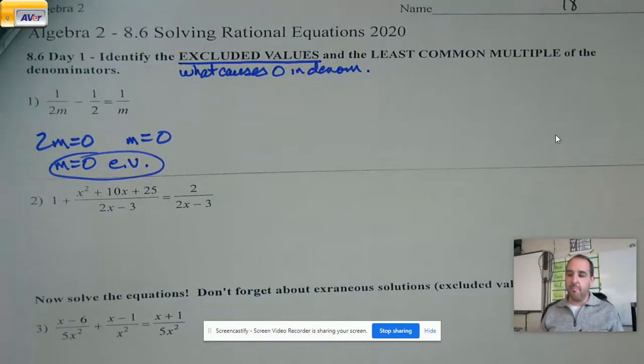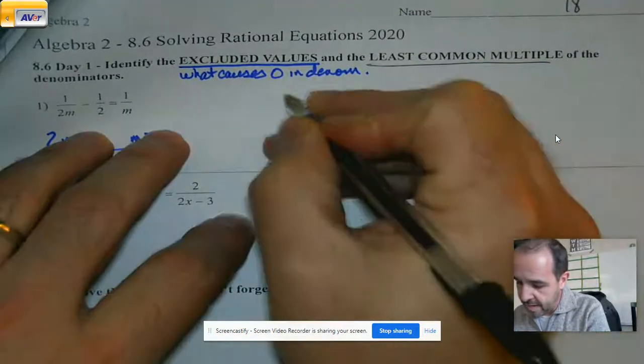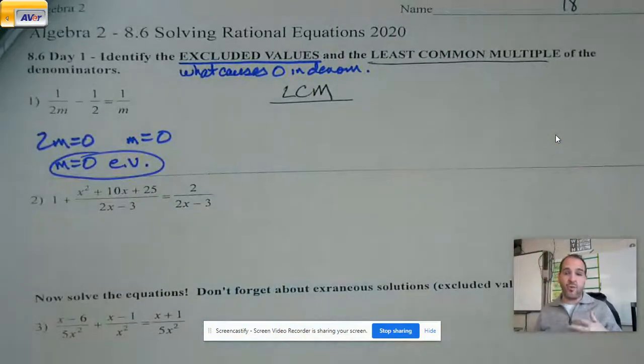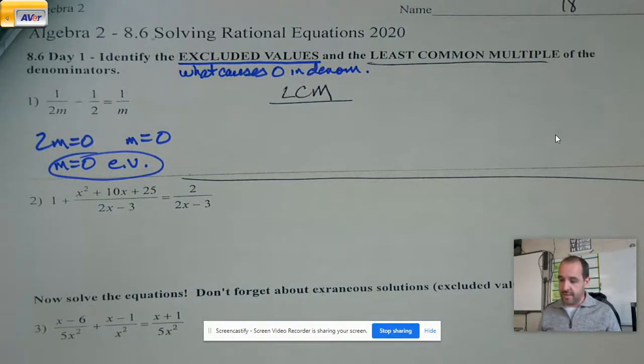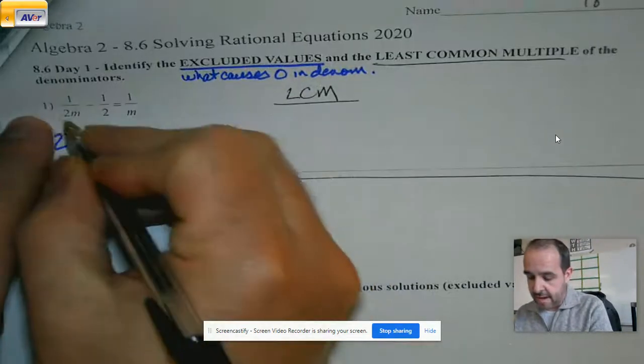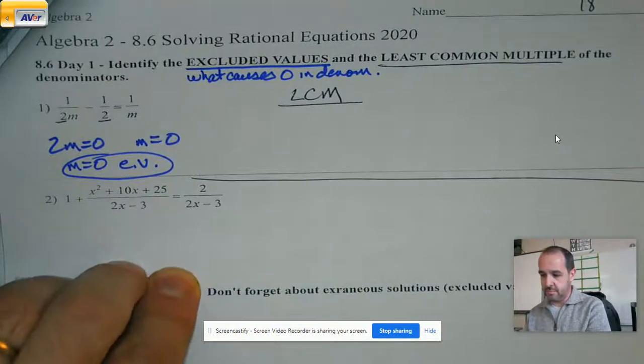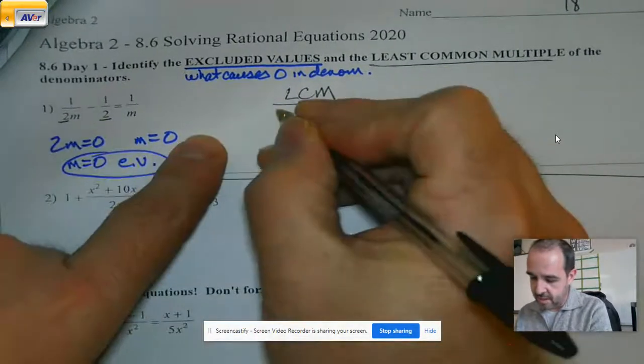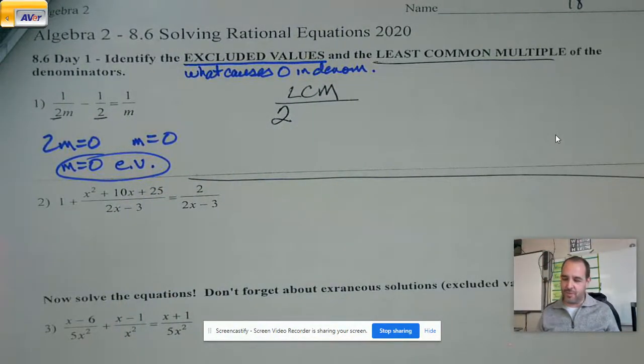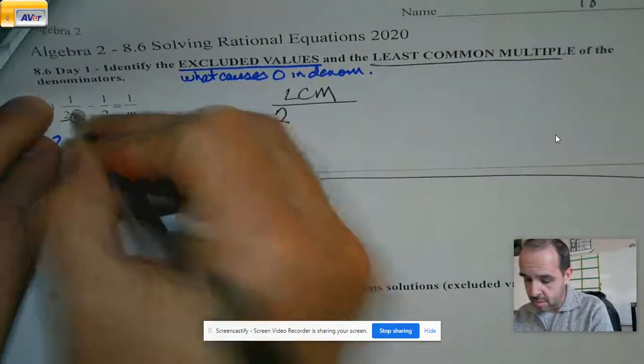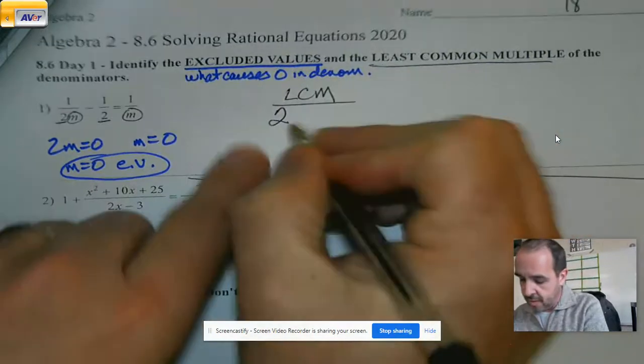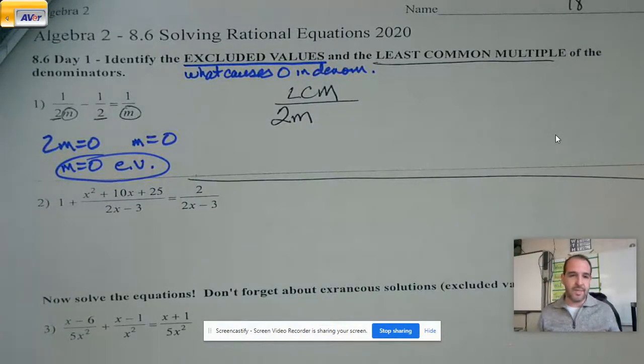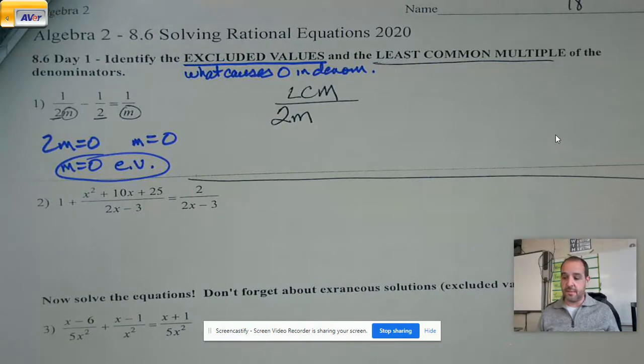Then finding my least common multiple. Now we've chatted about this before. When we're looking for my least common multiple, we're not going to do all the solving and stuff up here. Our sole purpose is to figure out what's that multiple going to be. So when I'm looking at this, I'm going to look at my coefficients. Well, 2 and 2, that's not real hard to figure out. 2 would be the smallest one that both of them go into.